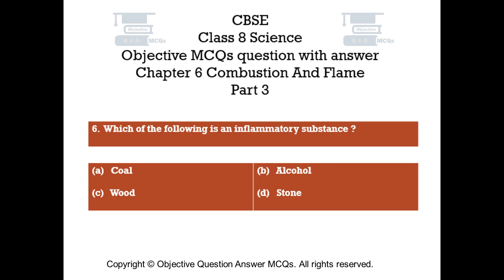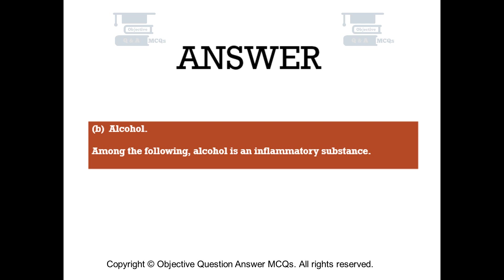Question number 6. Which of the following is an inflammatory substance? Option A Coal, Option B Alcohol, Option C Wood, Option D Stone. The right answer is Option B — Alcohol. Among the following, alcohol is an inflammatory substance.